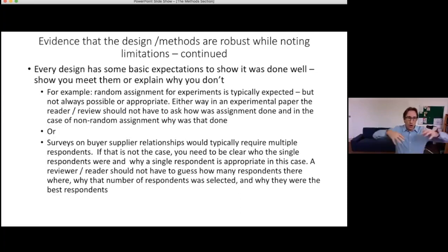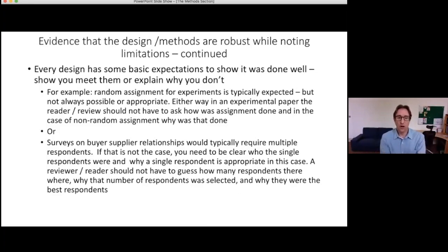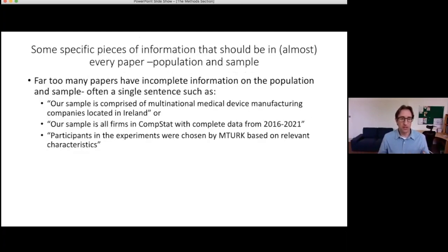Those are the three big things I'm looking for in a method section. You can see how they feed into each other: to justify your methodology, you have to be aware of its strengths and limitations; to be transparent, you have to make sure that you've done everything well. The second half I'm going to cover is specific areas and specific things we're looking for in a method section — the first being information about your population and sample.